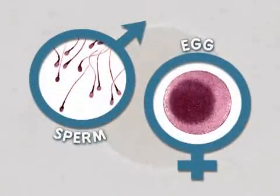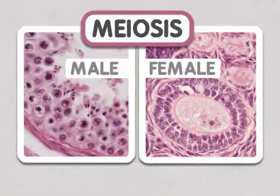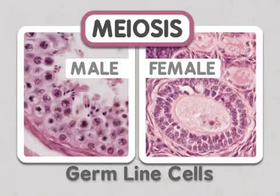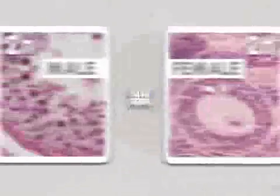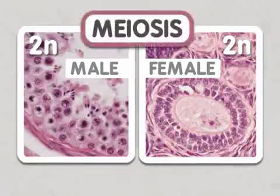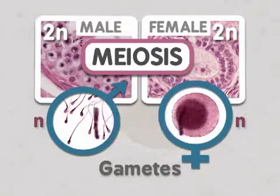Gametes are formed through a process called meiosis. The cells that undergo meiosis to produce the gametes are called germline cells. In diploid organisms, germline cells have two copies of each chromosome. Germline cells undergo meiosis to produce haploid gametes, which only have one copy of each chromosome.